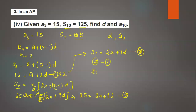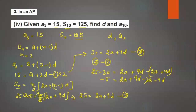Now subtract equation 3 from equation 2: 25 minus 30 equals 2a plus 9d minus 2a plus 4d. So minus 5 equals 2a plus 9d minus 2a minus 4d. The 2a terms cancel, and 9d minus 4d gives 5d. So minus 5 equals 5d, and d equals minus 1. The common difference is minus 1.